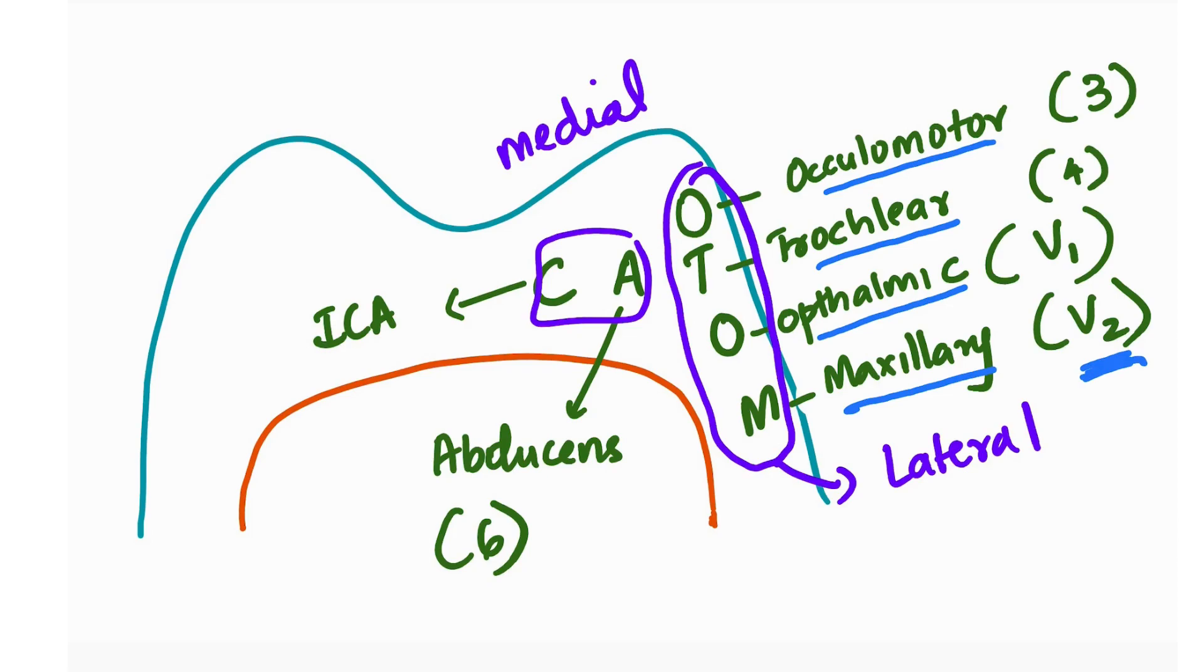Now what does C A stand for? A for abducens, which is the sixth cranial nerve. And C for, you should remember carotid, internal carotid artery. So this is what O Tom Cat is all about. This mnemonic has been there for many years and it's amazing. Because there's always a question on which structure is present on the medial side and which structure is present on the lateral side. You shouldn't get confused. C and A is on the medial side and O Tom is on the lateral side.